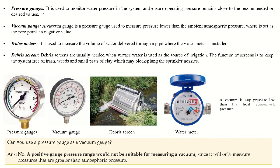The pressure gauge measures the operating pressure of the system. The vacuum gauge measures negative pressure — that is, pressure below atmospheric pressure — in the system. The water meter measures the total flow of water from the source to the sprinkler system, helping to determine the volume of water delivered to the installed pipe system.